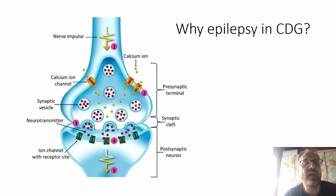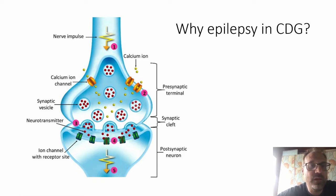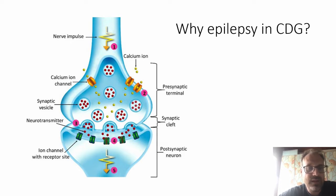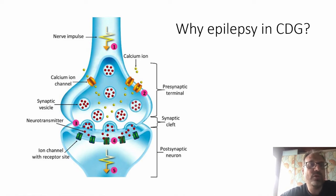If we look at the synapse between two neurons, this is where the nerve impulse is turned into a chemical signal in the synaptic cleft, where chemicals are released and traverse the synapse to the receiving cell, where ion channels are activated and a new nerve impulse continues. If there is a problem with the glycosylation of the molecules involved here, that might also disturb the signal and cause a seizure.